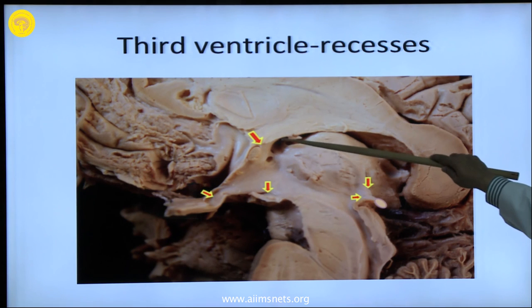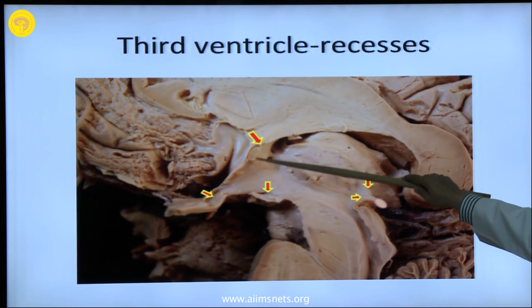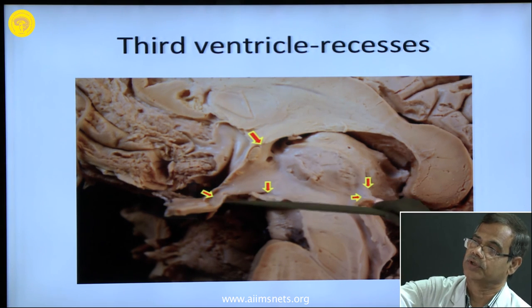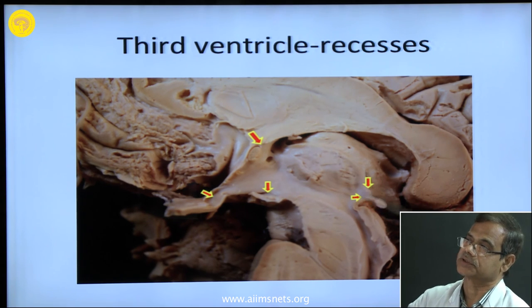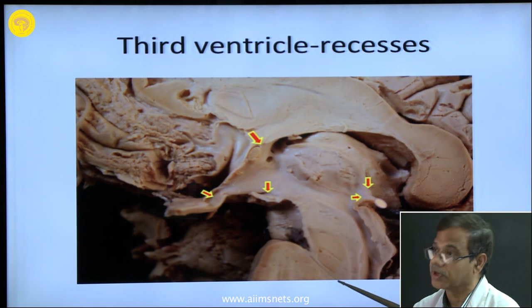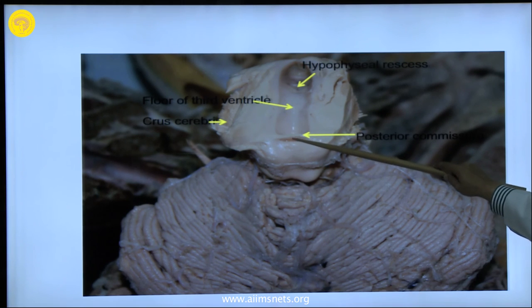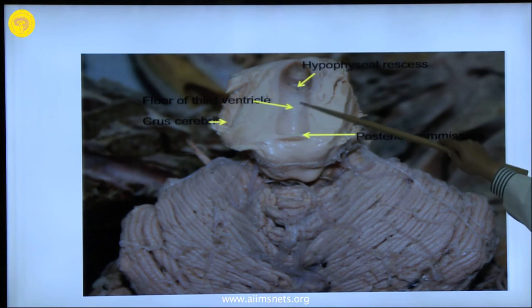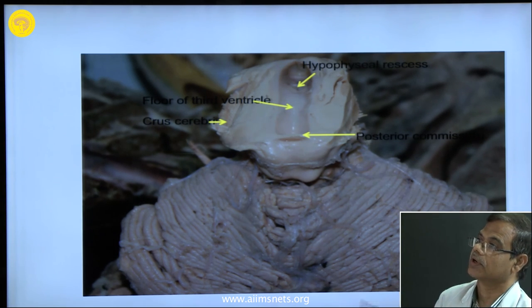Here are the recesses of the third ventricle. The anterior recess is between the two anterior columns of the fornix and above the anterior commissure — you can see one of the columns here. Then this is the optic recess in the floor. The infundibular recess is there. This is the suprapineal recess and the pineal recess. These are the recesses of the third ventricle. I had a very good specimen where you can see the floor of the third ventricle and the posterior commissure. These are the two colliculi. You can see the cerebral aqueduct — the third ventricle is continuous with the cerebral aqueduct — and here is the hypophysial recess. The crus cerebri can be seen on the lateral side.